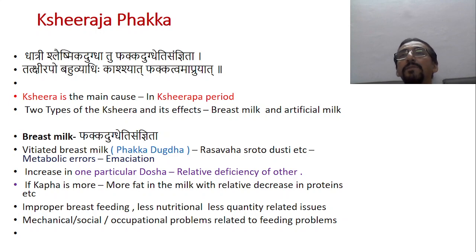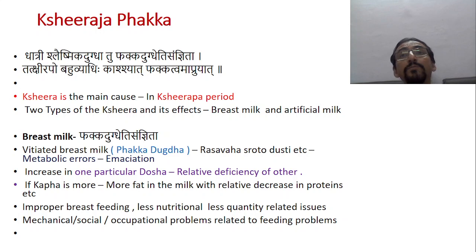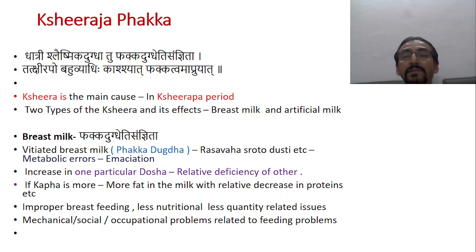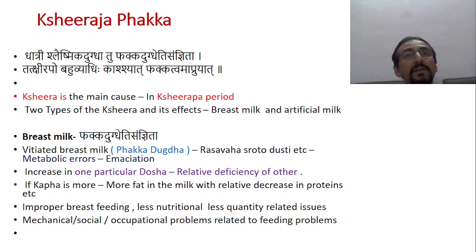Breast milk follows a very important principle: breast milk is baby-specific and breast milk is species-specific. Baby-specific means if the mother delivers a preterm baby, the breast milk produced by that mother is composed in such a way that it is very good for the preterm baby — more proteins, less fat, because it is not able to digest. If the mother delivers a normal baby, the breast milk produced is suitable for the normal baby; for a post-term baby, the milk is suitable for the post-term baby.